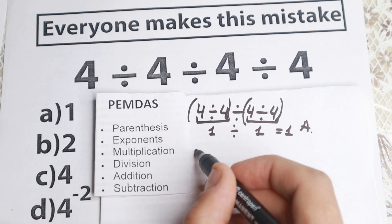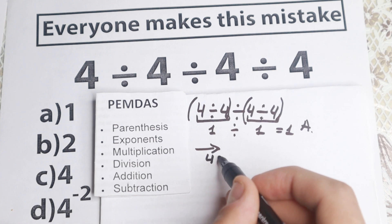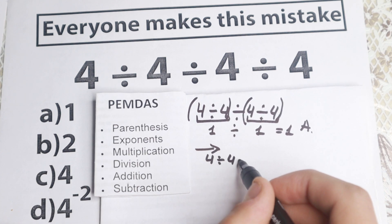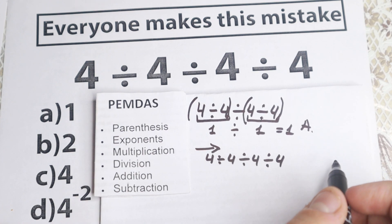But PEMDAS order works only from left to right. So let's rewrite our problem once more. So 4 divided by 4 divided by 4 and divided by 4. So we have this question.